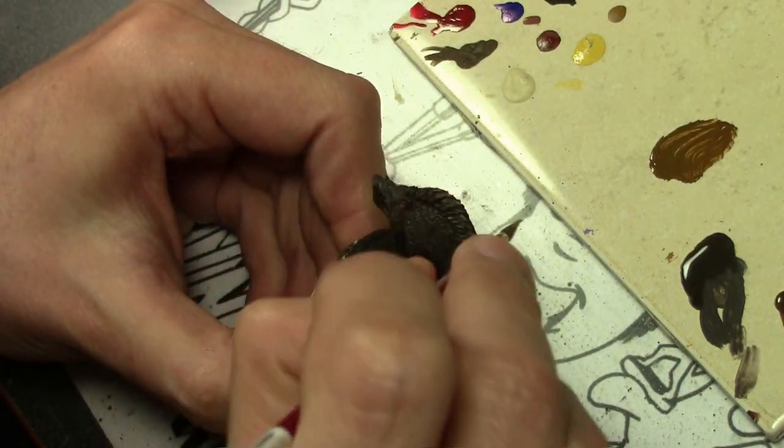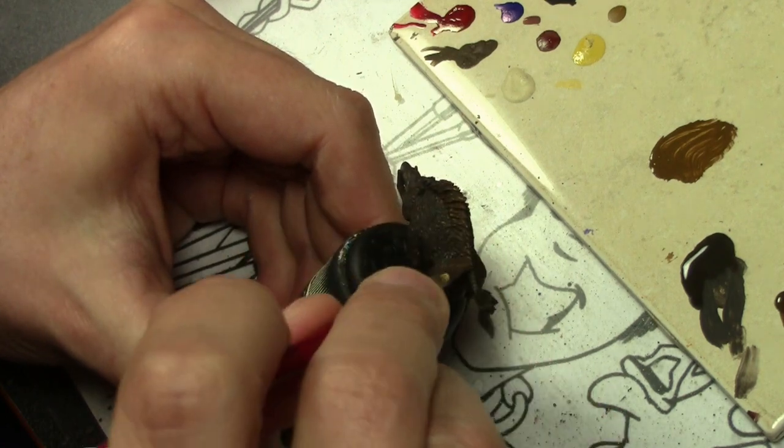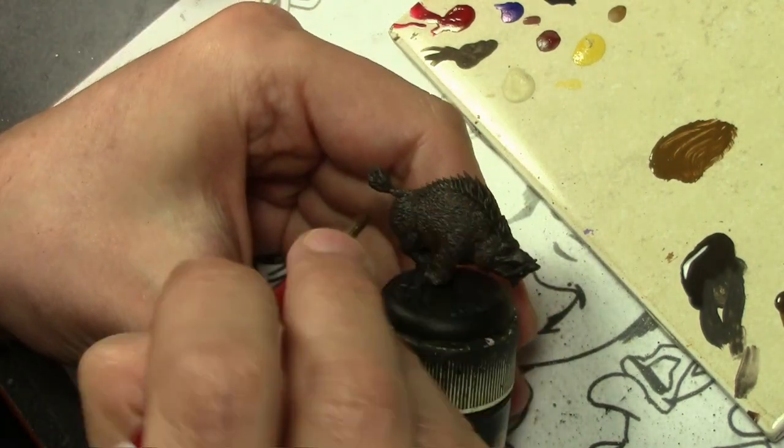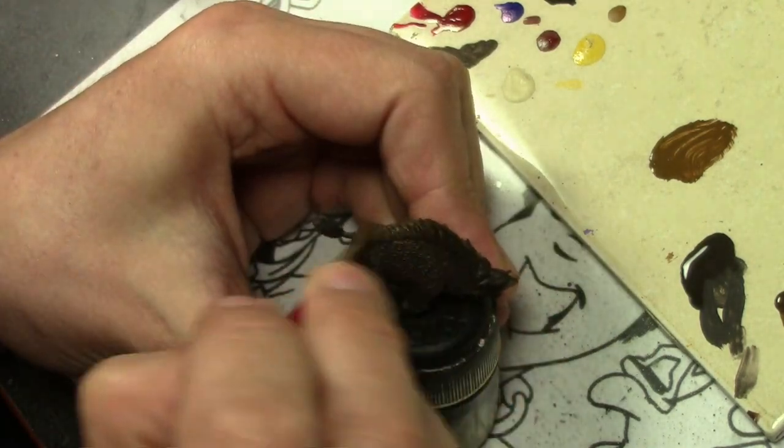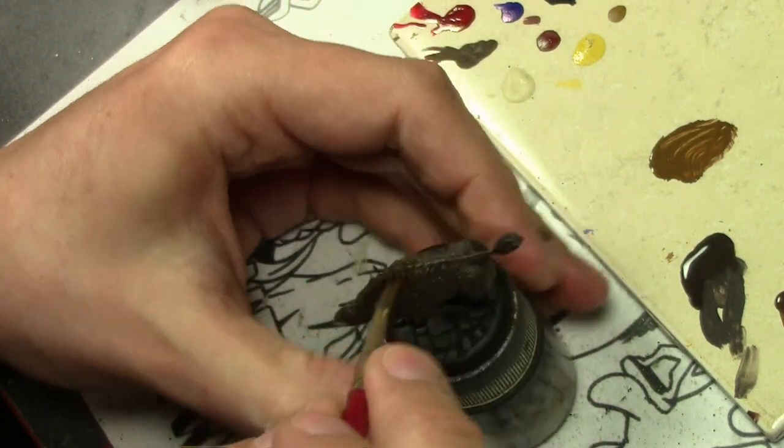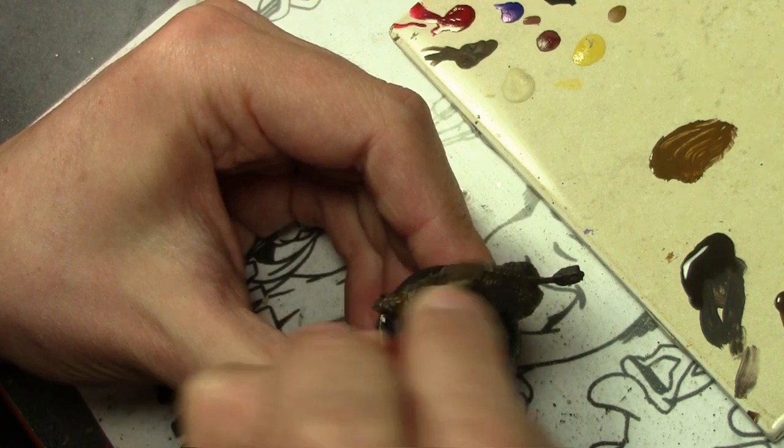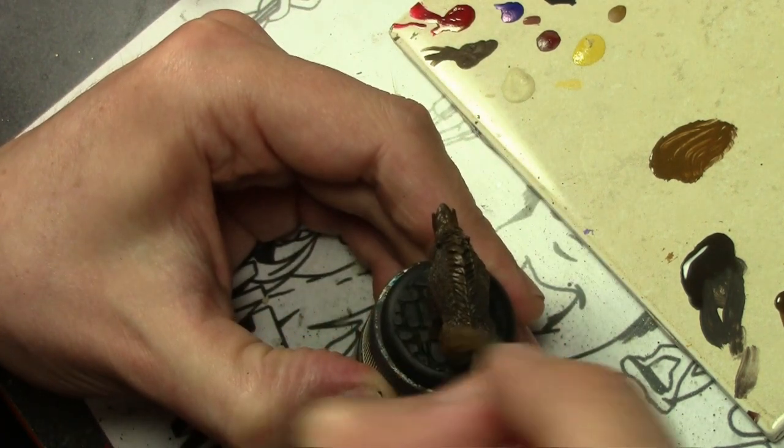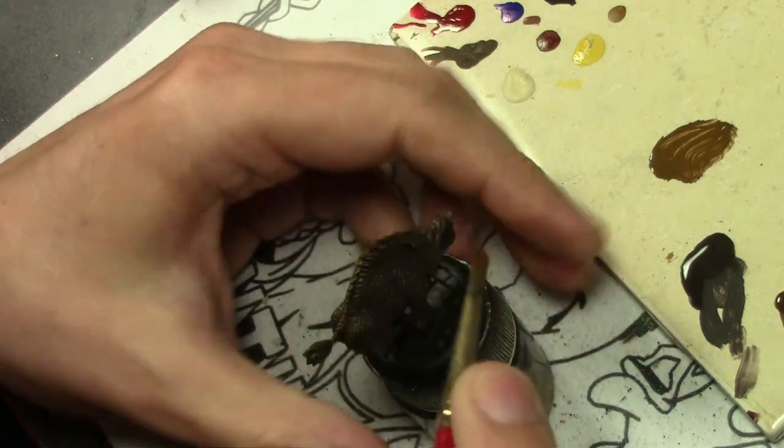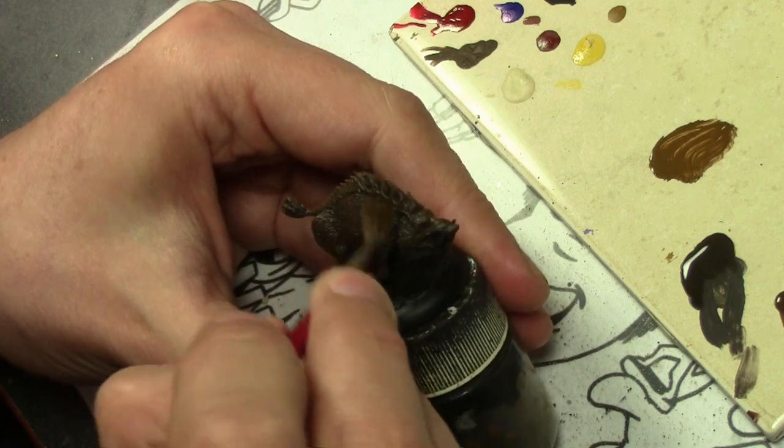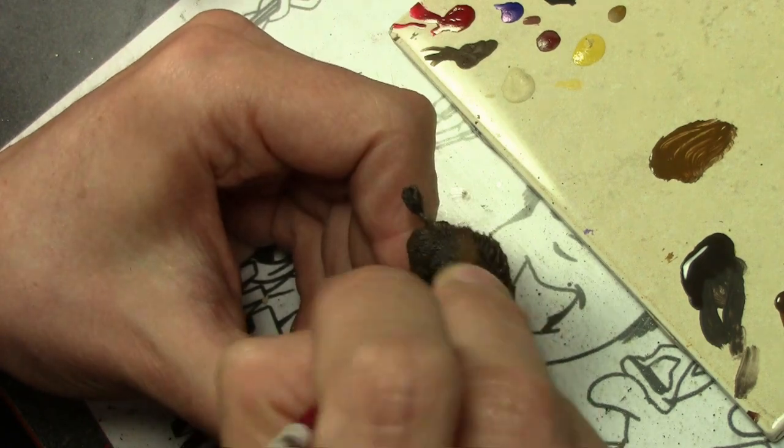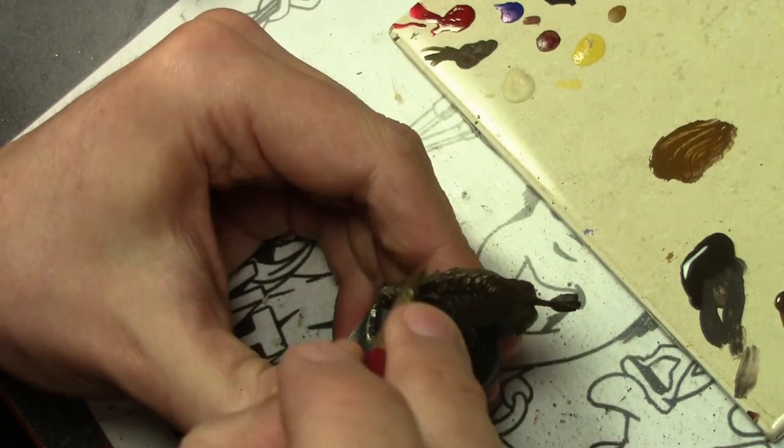For our next highlight we are mixing in Vallejo Model Color Flat Earth, continuing the process just moving upwards towards the highlight areas on the figure. When you have something like this where the hair goes in different directions, you should be for the most part going against the grain. If you go with the grain, you're more likely to fill in that detail. On the main body I'm going up and down, but on the mane I'm going back and forth.